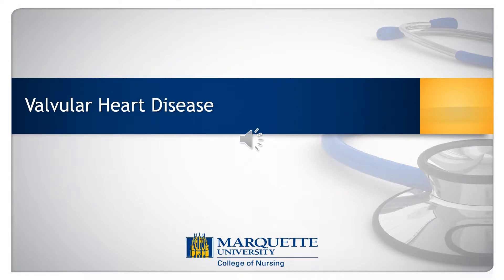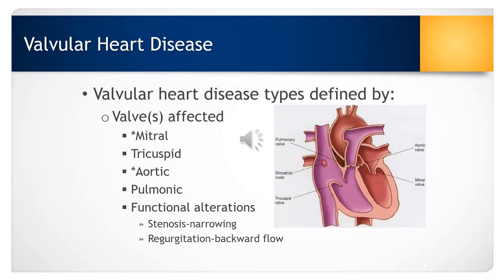The topic for this section is valvular heart disease. Valvular heart disease is typically defined by the valve it affects. The mitral valve and the aortic valve will be most commonly affected, but there can also be valvular disease in the tricuspid and pulmonary valve as well. Functional alterations can include stenosis, or narrowing of the valve, or regurgitation, which consists of backflow of blood through the valve.